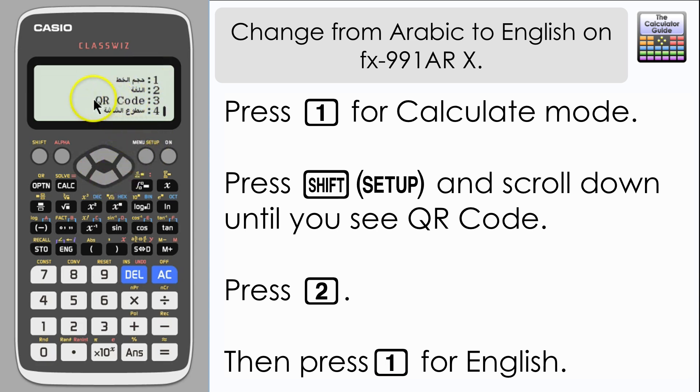Now you want the option that is above QR code, so option two in this case, and this enables you to change the language. So press two and you can see you have these two options here, English or Arabic. So if you press one it's now changed the calculator to English.